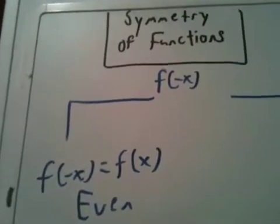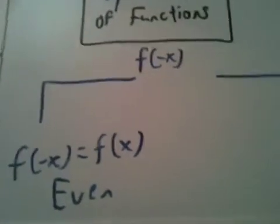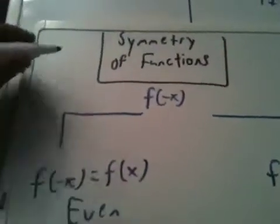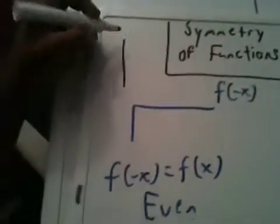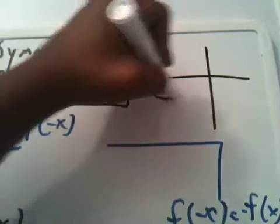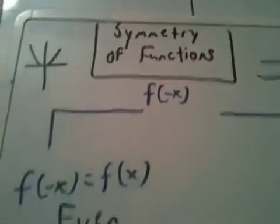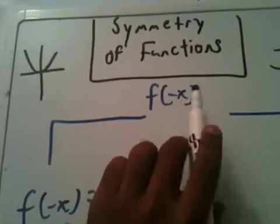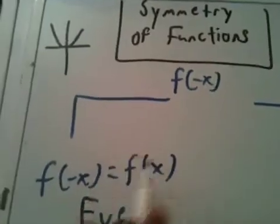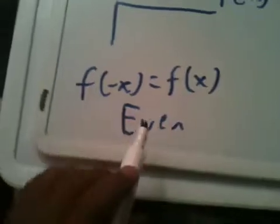So say you have a function f of x, and you want to determine if it's even or odd. Even and odd is just another way to say if a function is symmetric about the y-axis or if it's symmetric about the origin. There's a way we can determine that. If we take the number negative x and evaluate it at the function, if the function spits out the same exact thing, the original function, then the function is even and it's symmetric about the y-axis.